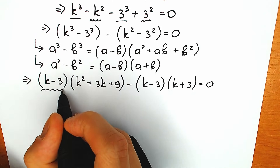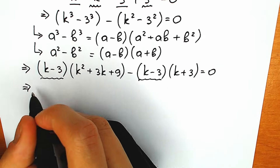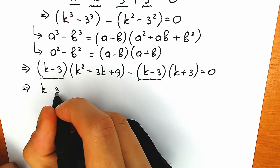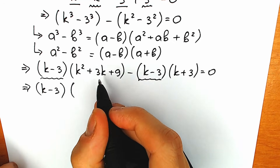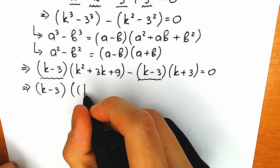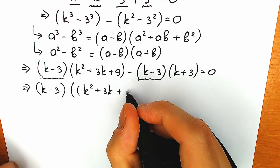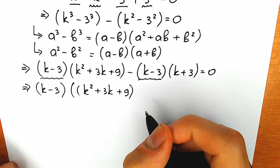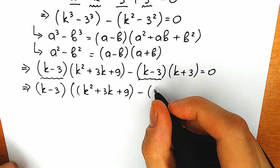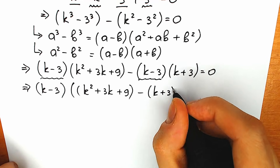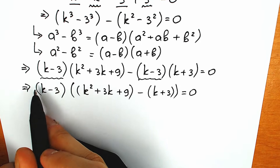We can see k minus 3 right here and k minus 3 right here, so we can easily factor that as a common factor. So we factor out k minus 3. In another parenthesis, what do we have? k squared plus 3k plus 9, and we have minus k plus 3. This is our expression. Of course we can't simplify this more as is.